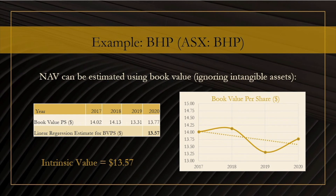Let us now look at some examples. Here we will be estimating the NAV of the mining company BHP. To simplify the computation, we will be ignoring intangible assets, which ensures that the company's NAV and book value coincide. The advantage is that book value per share is often included in financial statements. In the table to the left, we see the company's book value per share over the last four years, and to the right is a more visual presentation of this data. We can see that the book value is downtrending, and applying linear regression to get the best straight-line fit, that line hits $13.57 per share in 2020. That is our estimate for the fair value of BHP using the NAV approach.